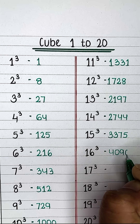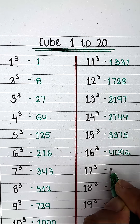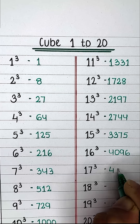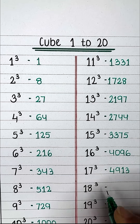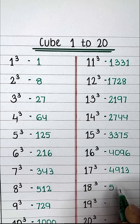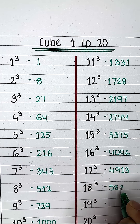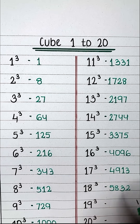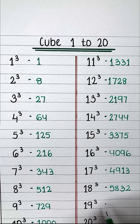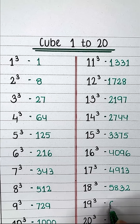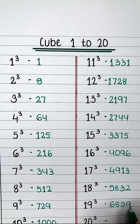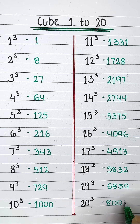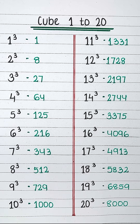Cube of 15 is 3375. Cube of 16 is 4096. Cube of 17 is 4913. Cube of 18 is 5832. Cube of 19 is 6859. And finally, cube of 20 is 8000.